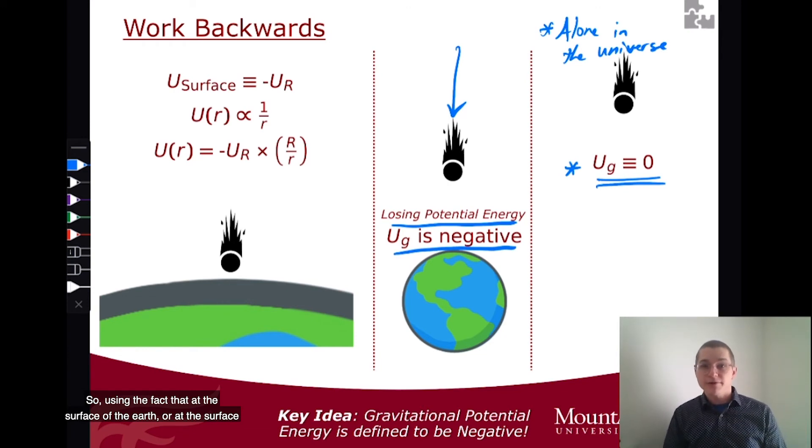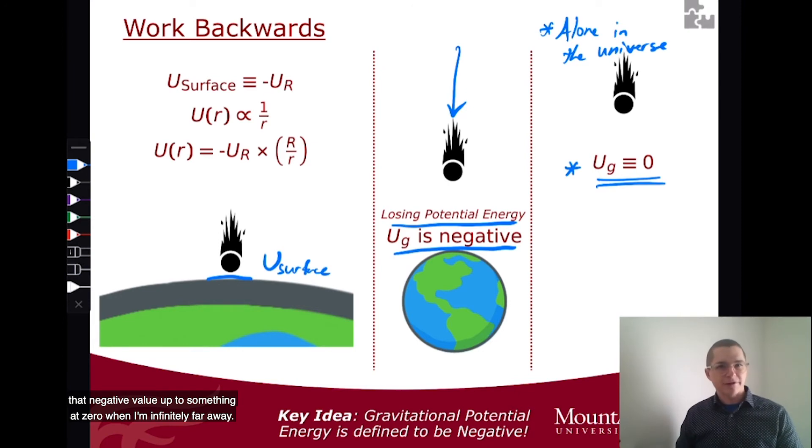So using the fact that at the surface of the planet, we have this negative potential energy, we can define it as some minus UR, so the surface potential, it has to go from that negative value up to something that's zero when I'm infinitely far away.